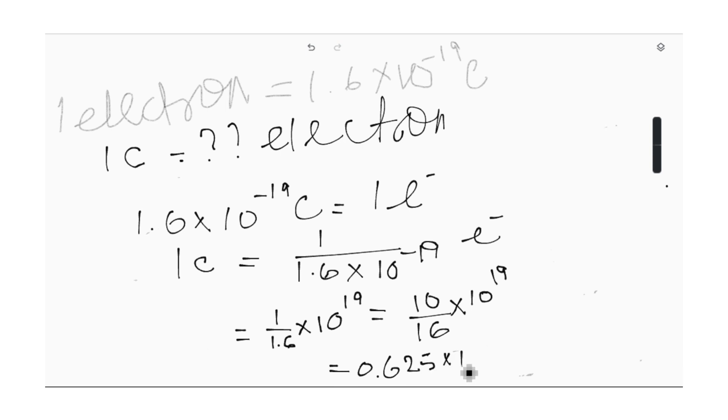So I will make it easy for you. 1 by 1.6 into 10 to the power minus 19 will become plus 19, right? Next, 1.6 we will remove the decimal so it will become 16. So it will be 10 divided by 16. If you divide 10 by 16, you will get approximately 0.625. We will write in standard form: put the decimal after one digit, so it becomes 6.25 into 10 to the power 18.